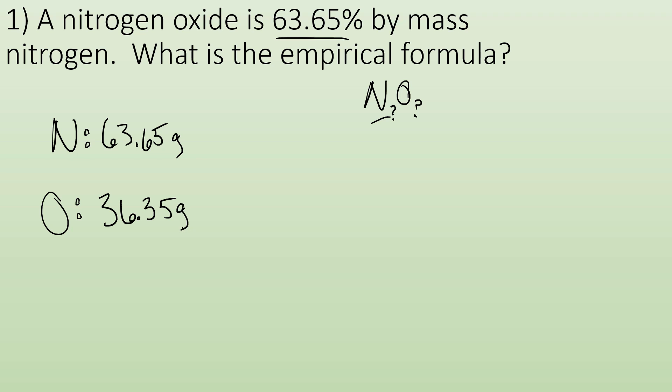So now we have what the masses would be for a 100 gram sample. So now we can convert that to moles. I know that one mole of nitrogen is 14.01 grams. So now my grams cancel out and I'll end up with moles of nitrogen. When I do that, I plug and chug, I get 4.543 moles.